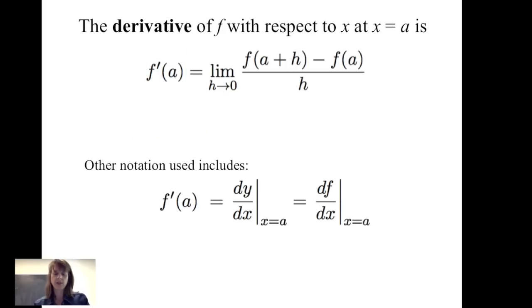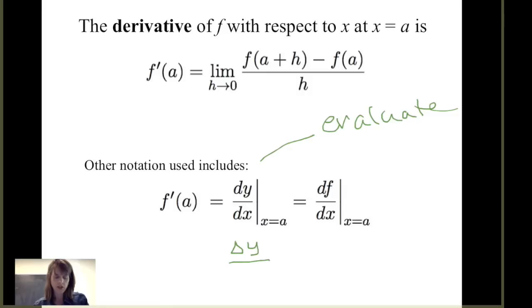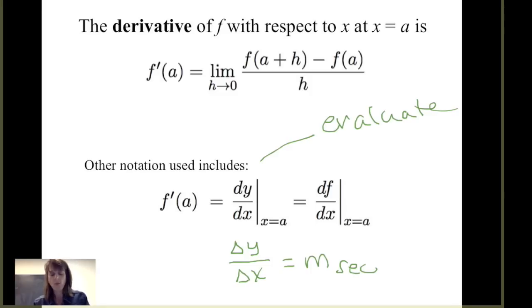Some other notation includes dy/dx with a vertical bar and subscript x equals a, meaning we evaluate the derivative at x equals a. Or we can write df/dx evaluated at x equals a. This dy/dx notation is reasonable since we usually see change in y divided by change in x as the slope of a secant line, and taking the limit as delta x goes to 0 gives us dy/dx.